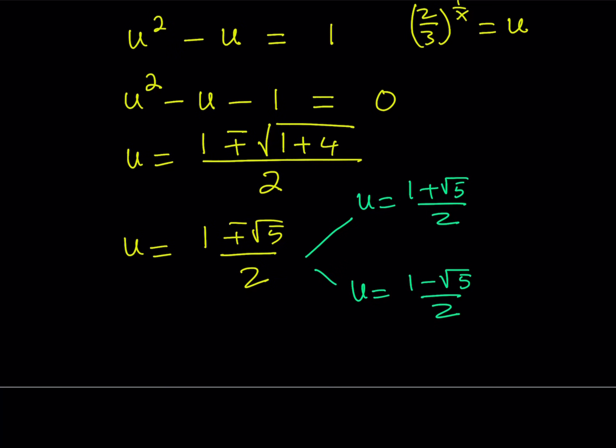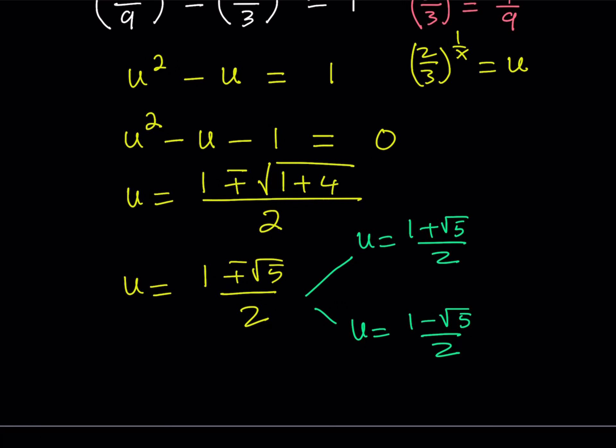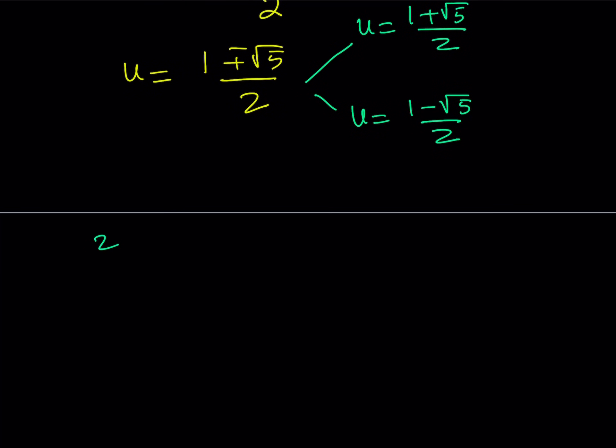All right. So, now what we're going to do is we're going to back substitute. So, what is u? u is equal to 2/3 to the power 1 over x. So, let's go ahead and set them equal to each other. 2/3 to the power 1 over x is equal to 1 plus root 5 over 2. Great. Now, we do have an exponential equation. But it's much simpler than what we started with, obviously, because we have a single base.